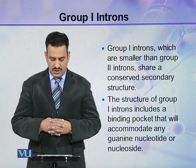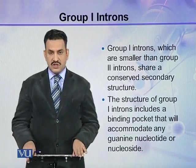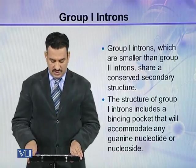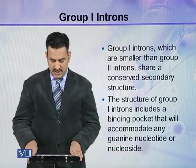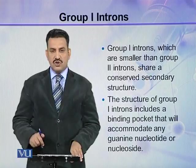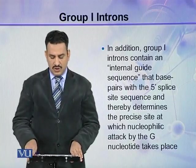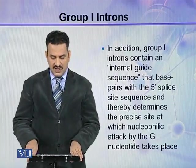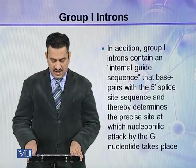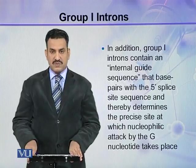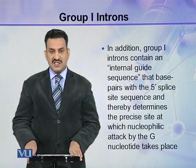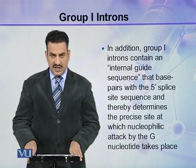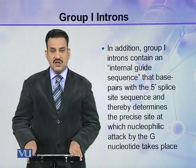Group 1 introns, which are smaller than Group 2 introns, share a conserved secondary structure. The structure of Group 1 introns includes a binding pocket that accommodates any guanine nucleotide or nucleoside. In addition, Group 1 introns contain an internal guide sequence that base pairs with the 5' splice site sequence, and thereby determines the precise site at which nucleophilic attack by the G nucleotide takes place.